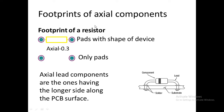Now, some more footprints. For example, this is the footprint of a resistor. This is also the footprint of the same component — the resistor — but in this footprint the pads are shown with the shape of the device, whereas in the other figure the shape of the device is represented by a rectangular box. This type of footprint is the footprint of axial lead components. Axial lead components are the ones having their longer side along the PCB surface. Just as shown in this figure, the resistor is mounted so that its length is along the PCB — so it is an axial lead component.